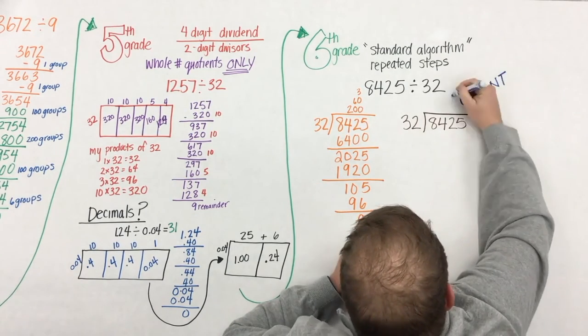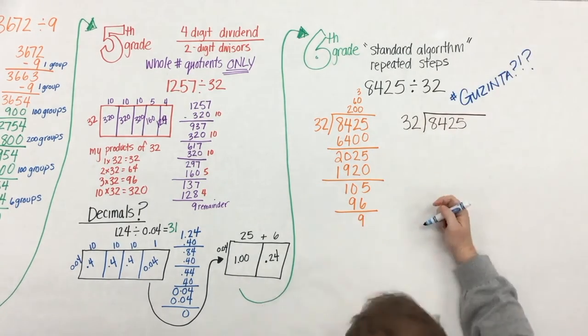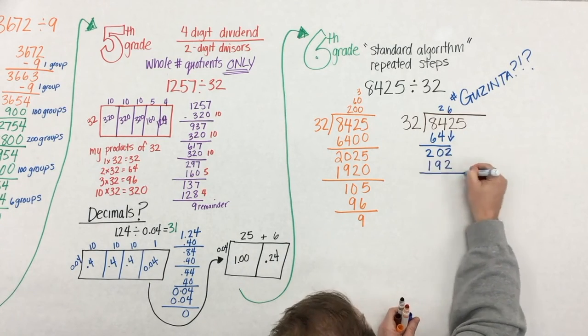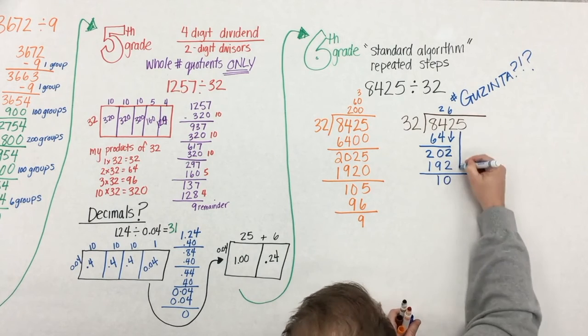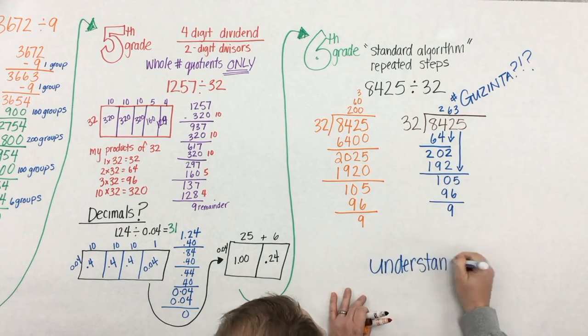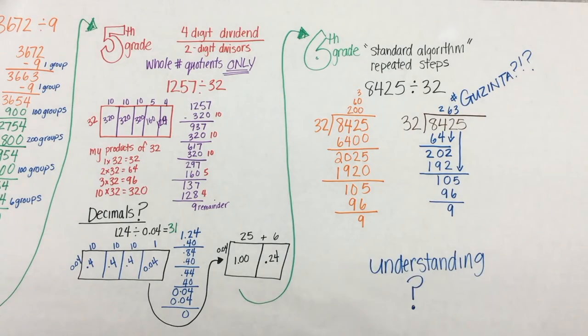Well, 32 doesn't go into 8, but 32 gazenta. Gazenta? What does that mean? And here we have the traditional algorithm, which many of us are familiar with. But you see how there's a connection between the two, which one has understanding.